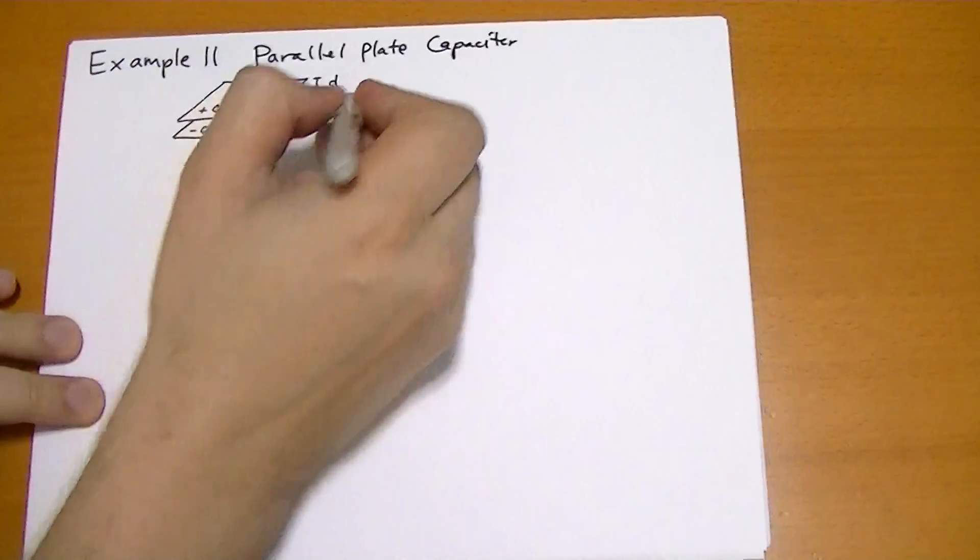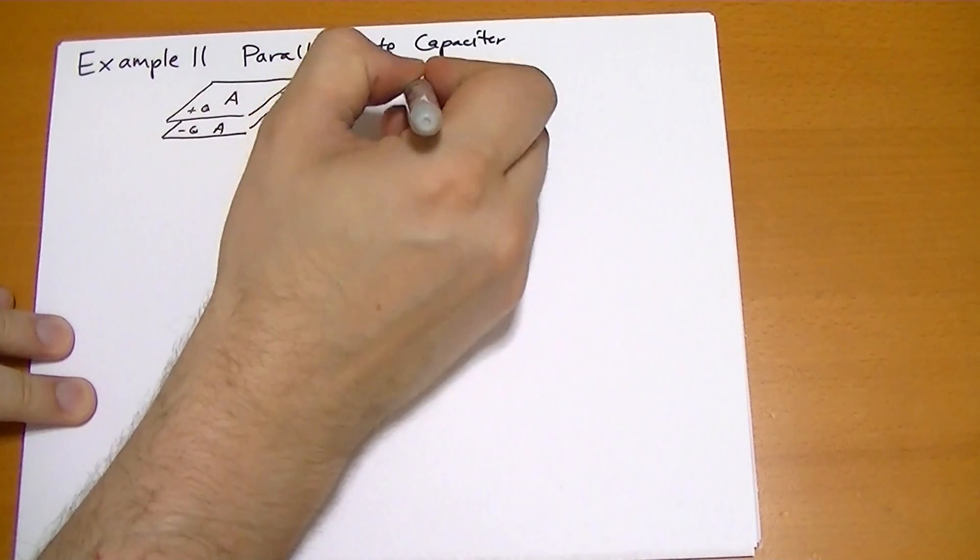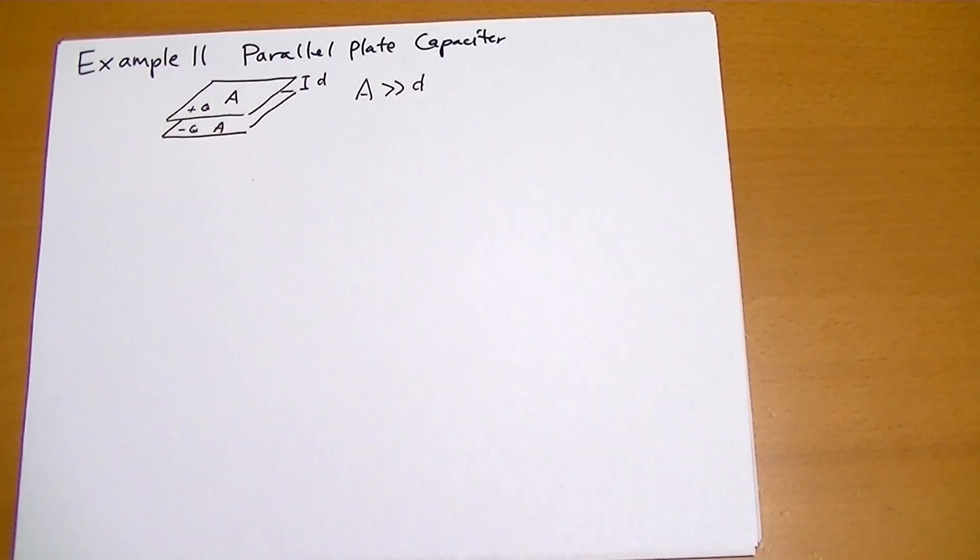And one of the key constraints is that the area is much larger than D, which is pretty important. You can imagine the math isn't quite as easy if the parallel plates are far away from each other.